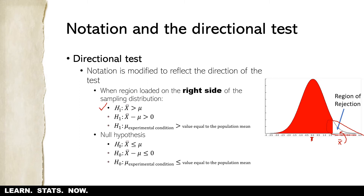The null hypothesis would then be re-expressed as: the sample mean is less than or equal to mu. We say 'less than' because any sample mean falling below the critical value all the way to the left tail is in the area where we would fail to reject the null hypothesis — even if the sample mean ended up way out on the far left. The key operators here are greater-than signs for the alternative hypothesis and less-than-or-equal-to signs for the null.